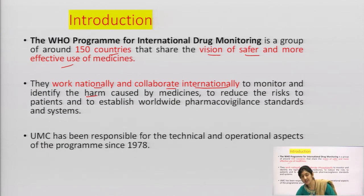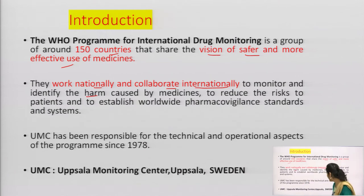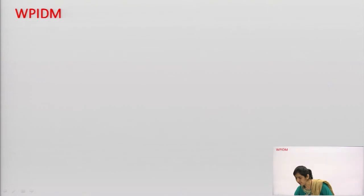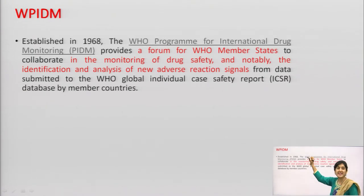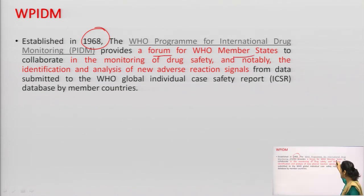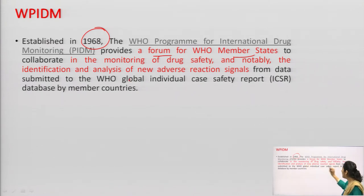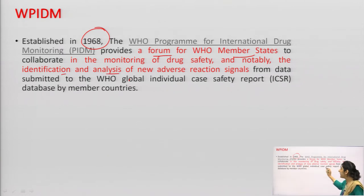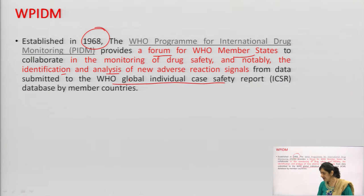What is UMC? It is the Uppsala Monitoring Centre, based in Uppsala city of Sweden. It was established in 1968. This WHO Program for International Drug Monitoring provides a forum for WHO member states to collaborate in the monitoring of drug safety, notably identification and analysis of new signal areas from the data submitted to the WHO global individual ICSR database.